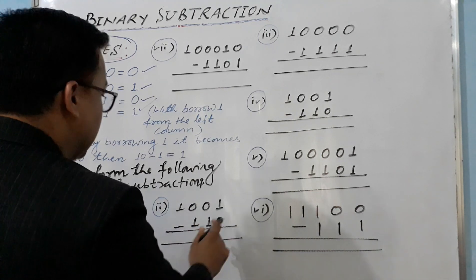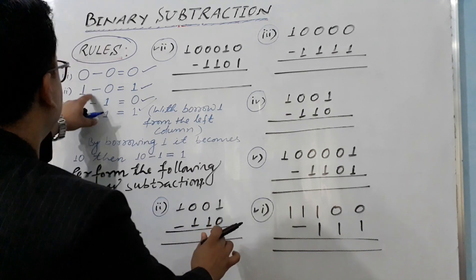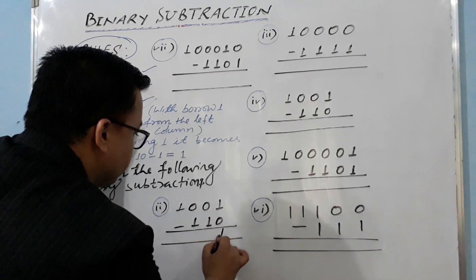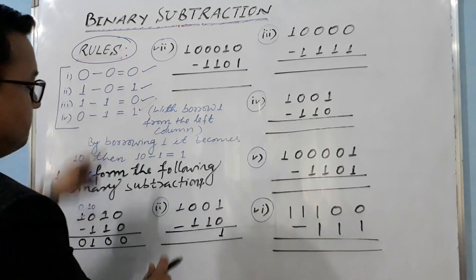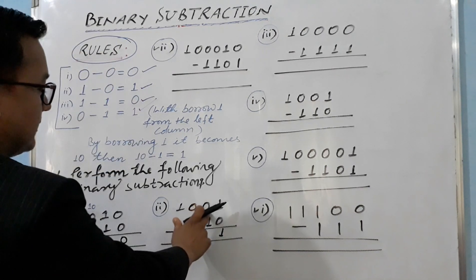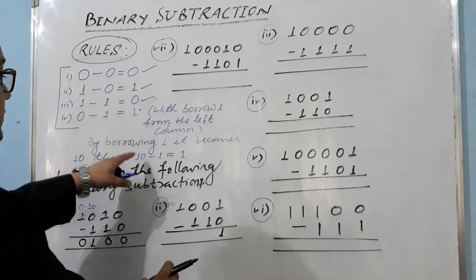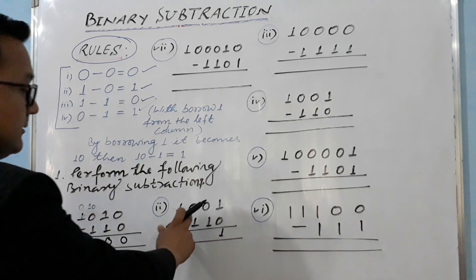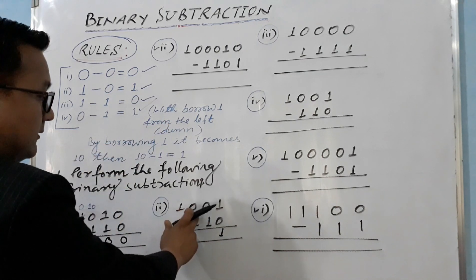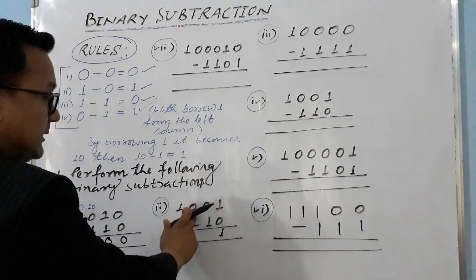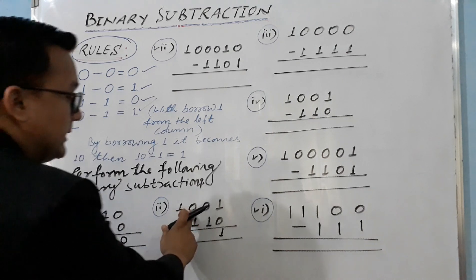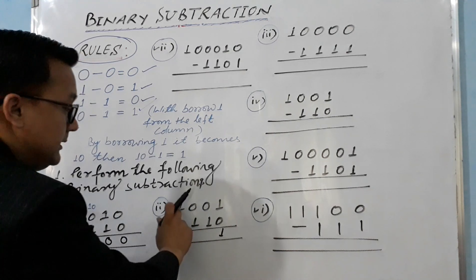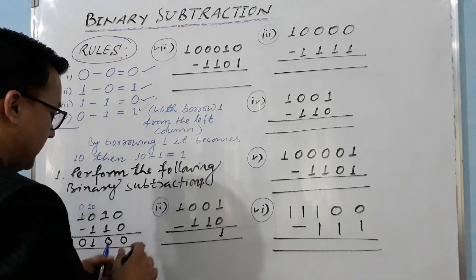One minus zero equals one. Now here zero minus one — we need to take a borrow from the left column. But immediately on the left column we have zero, so we can't take a borrow from there. We need to go further left.